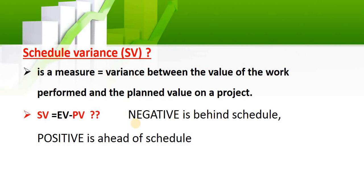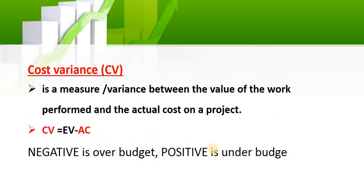Schedule variance, called SCV, measures the variance between what you earned minus what you planned. If it is positive, it means what you have earned is bigger than what you planned, so you are ahead of schedule. If it is negative, what you have earned is less than what you planned, so you are behind schedule. It is very simple — once you understand it you will like it and can practice it on your project.